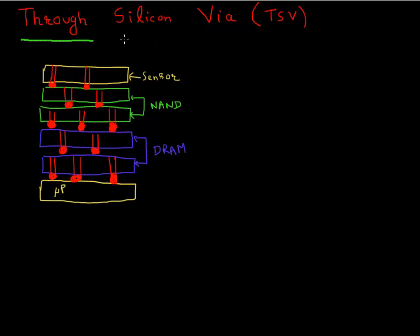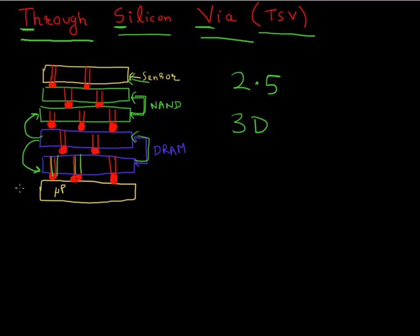One of the key enablers for making these 2.5D or 3D chips is this process technology called through silicon via, or more commonly abbreviated as TSVs. These through silicon vias are essentially critical because they allow this kind of 3D stacking of chips and they enable this chip to communicate with the chip above it and communicate with the chip below it. They also bring in the power supply voltage and so on.